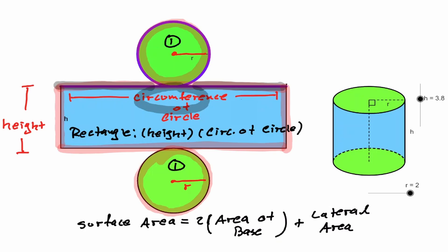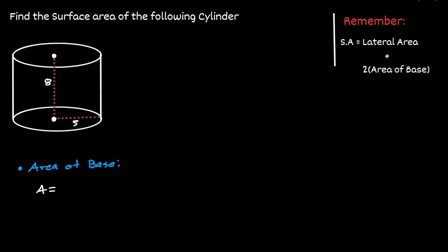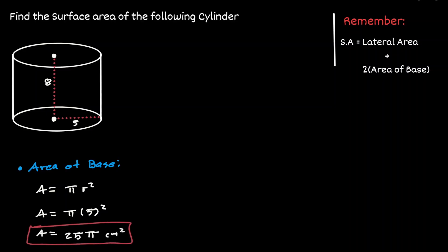Let's take a look at one example. Let's find the surface area of the cylinder. Let's start by finding the area of the base. Notice that the base is a circle, and the area of a circle is π r². The radius is 5, so the area of the base is 25π centimeters squared.